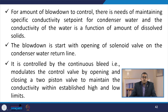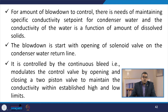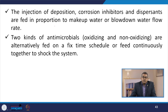For blowdown control, there is a need to maintain a specific conductivity set point for condenser water. Conductivity of the water is a function of the amount of dissolved solids. Blowdown starts with the opening of a solenoid valve on the condenser water return line, controlled by continuous bleed that modulates a control valve by opening and closing a two-position valve to maintain conductivity within established high and low limits. Deposition and corrosion inhibitors and dispersants are fed in proportion to makeup or blowdown water flow rate. Two kinds of antimicrobials — oxidizing and non-oxidizing — are alternatively fed on a fixed time schedule or fed continuously together to shock the system.